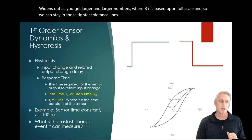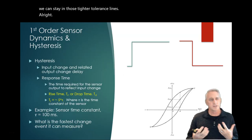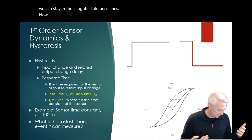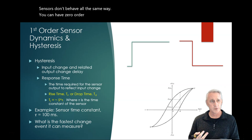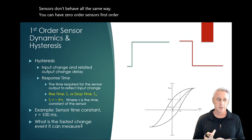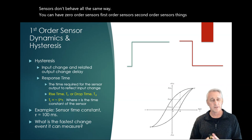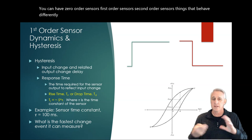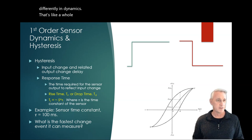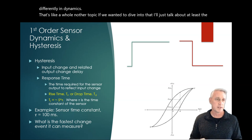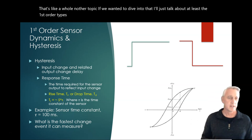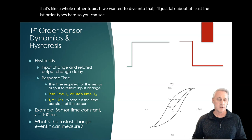It really depends upon what the sensor is. The accuracy of A widens out as you get larger numbers, where B, it's based upon full scale and so we can stay in those tighter tolerance lines. Now, sensors don't behave all the same way. You can have zero-order sensors, first-order sensors, second-order sensors, things that behave differently in dynamics. I'll just talk about at least the first-order types here.